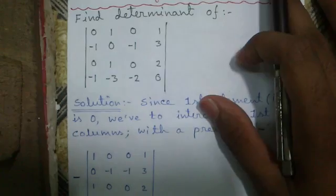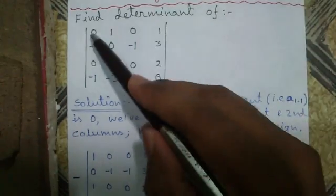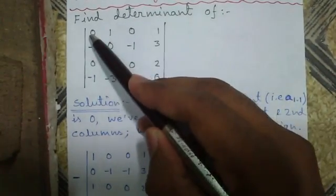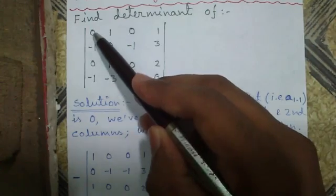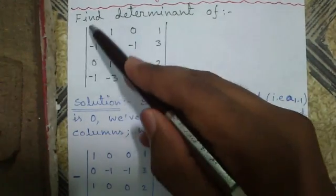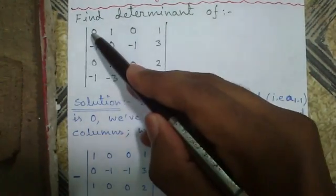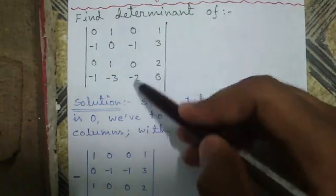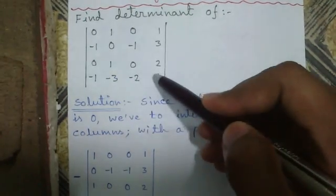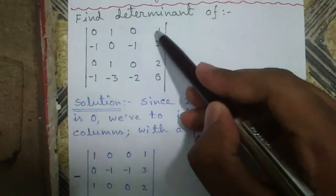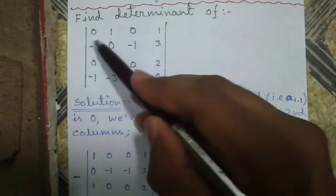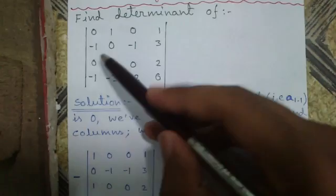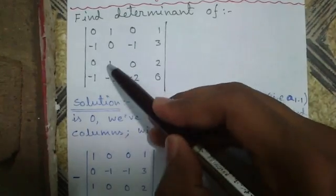For Chiyo's method to work, we need the first element to be a non-zero number — that may be a negative or positive number, but other than 0. To get a non-zero number at this position, we have to interchange column 1 with any column which has a non-zero number in the top row. So we can interchange column 1 with either column 2 or column 4.